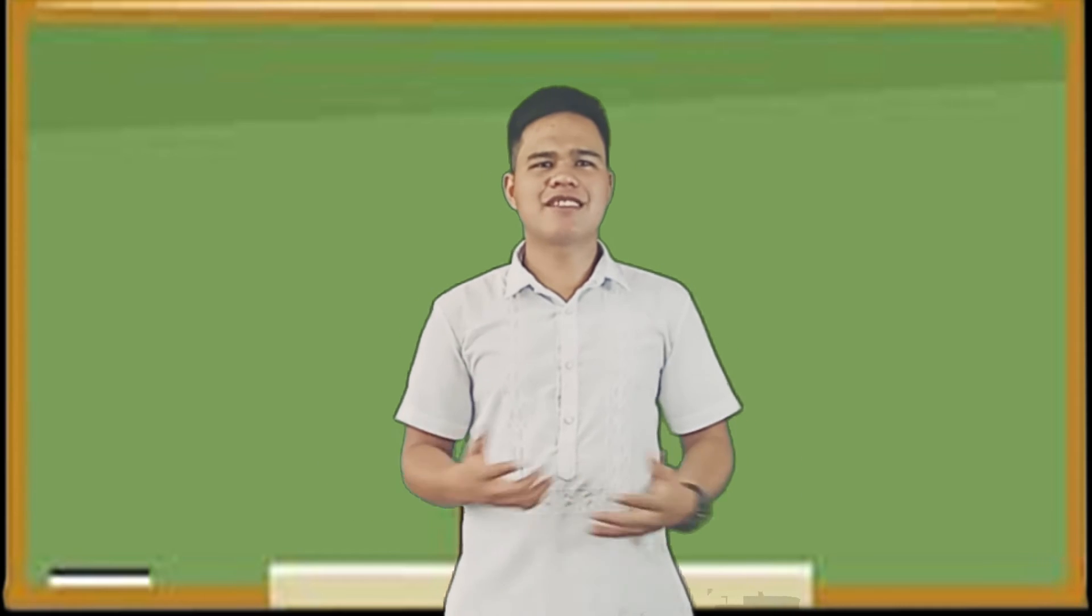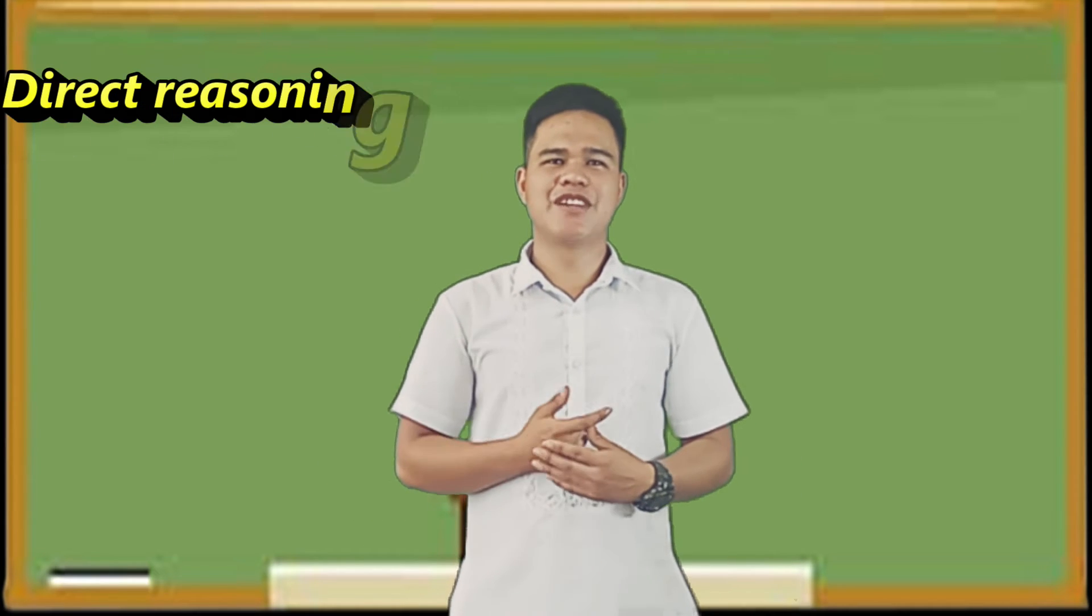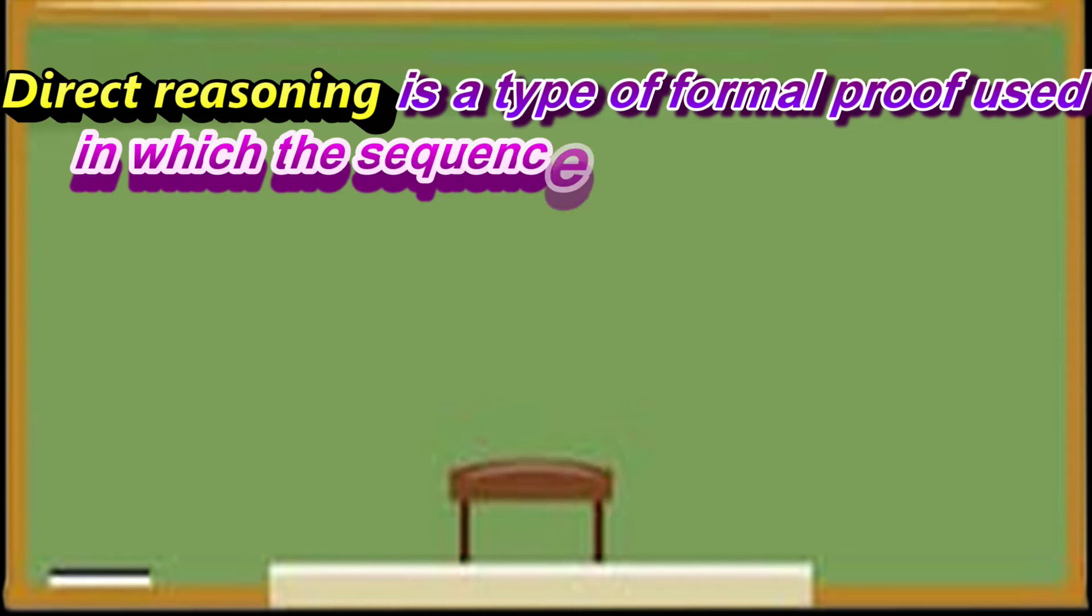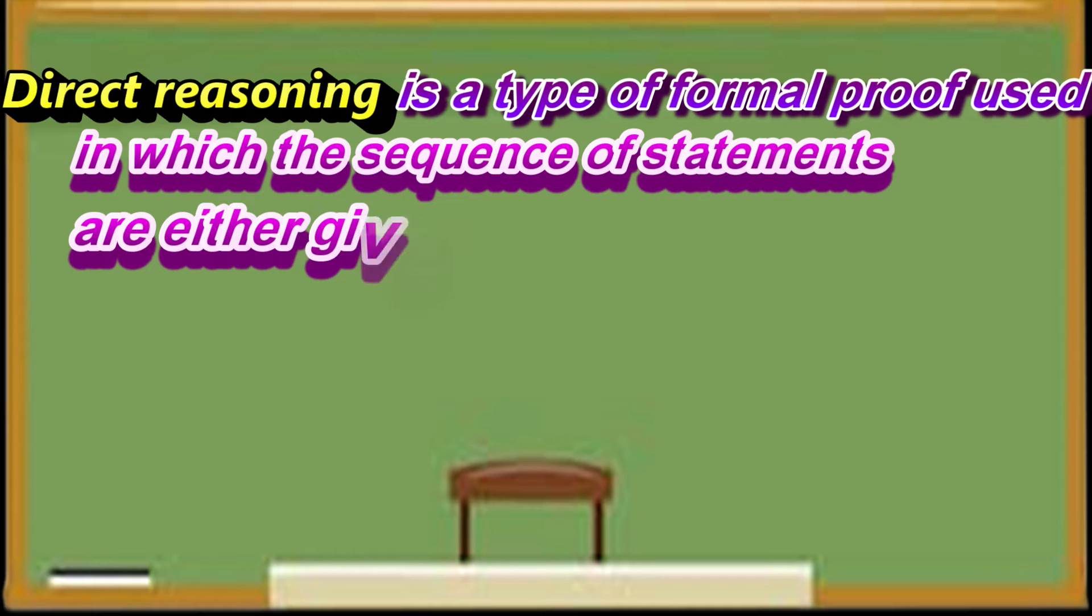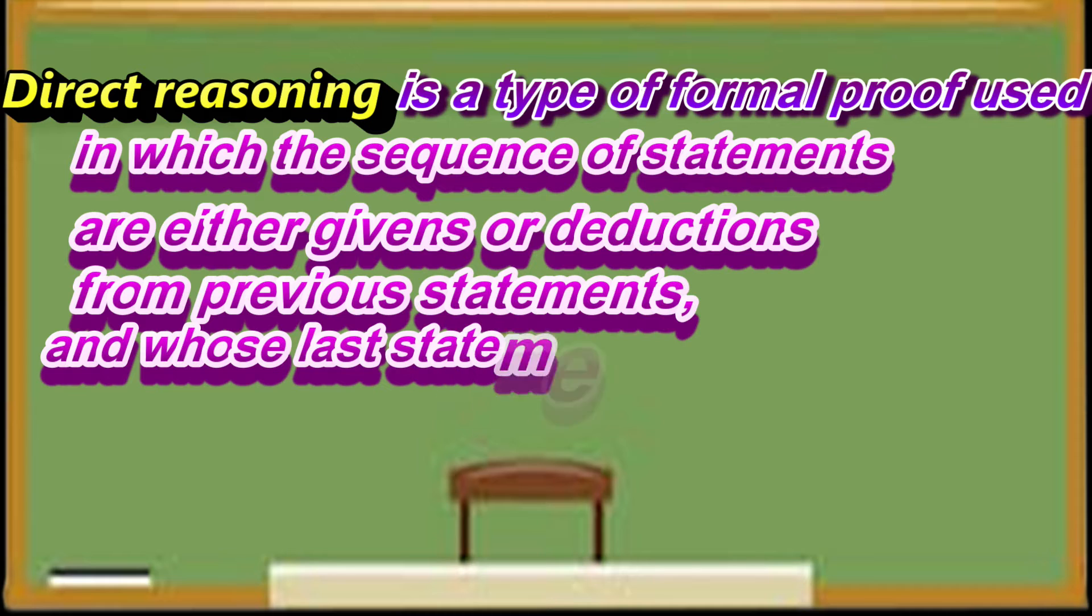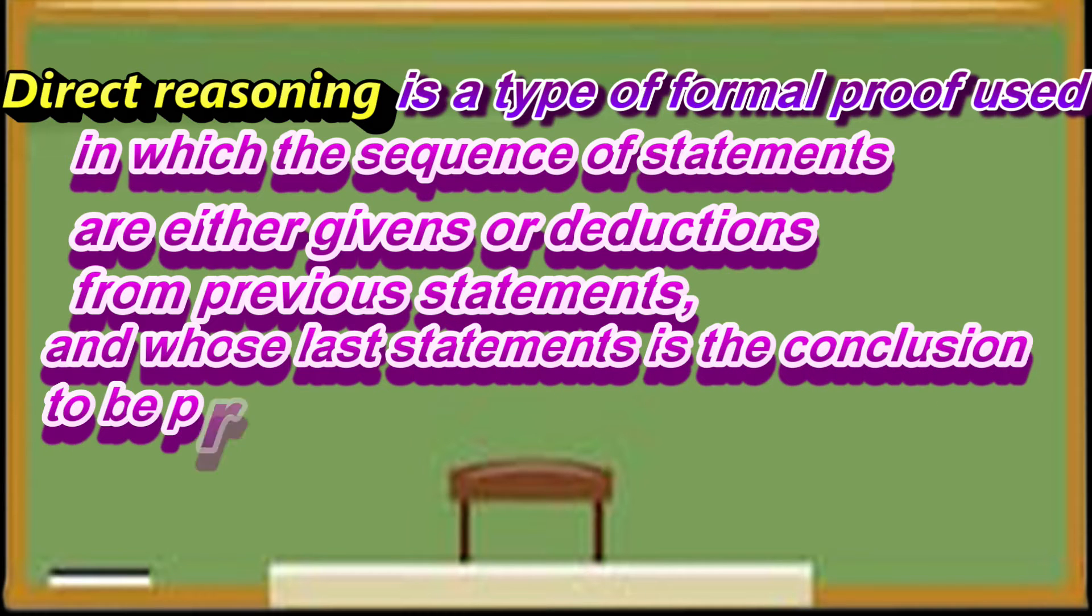Let's go now to direct reasoning. Direct reasoning is a type of formal proof used in which the sequence of statements are either given or deductions from previous statements, and whose last statement is the conclusion to be proven.